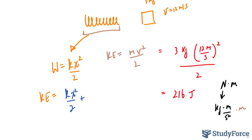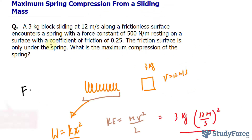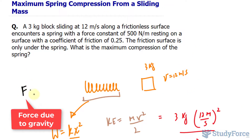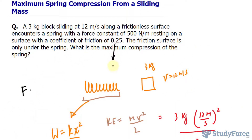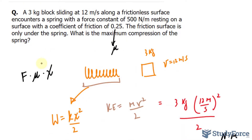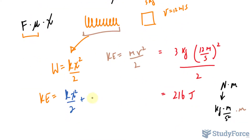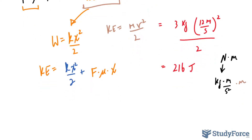Let's come up with an expression for the friction work. The expression can be written as the force multiplied by the coefficient of friction — 0.25, represented as mu — multiplied by the distance compressed, x. Work is defined as force times displacement, and here we have our force and displacement. So multiplying these together gives the amount of work: force times mu times x.